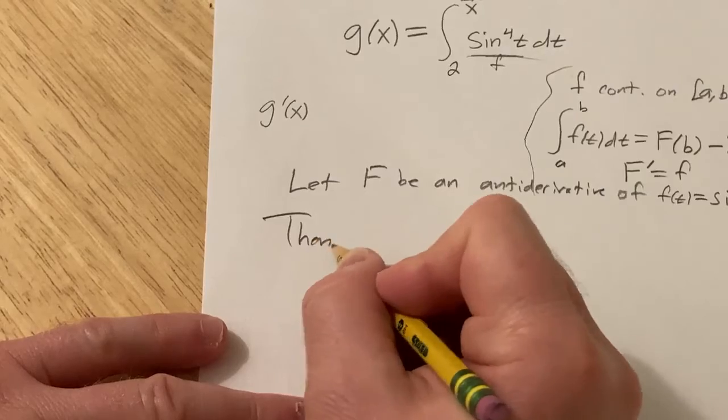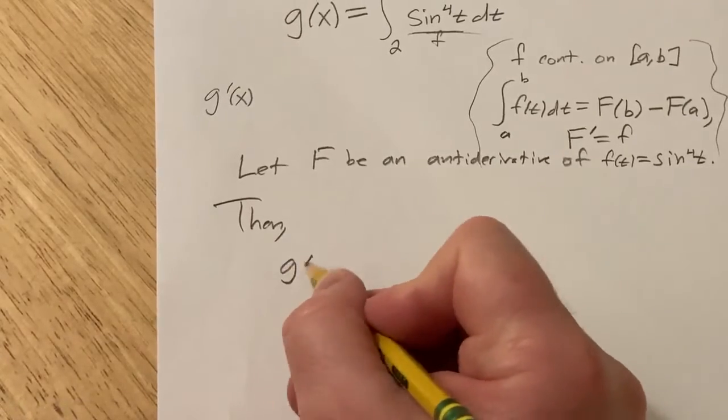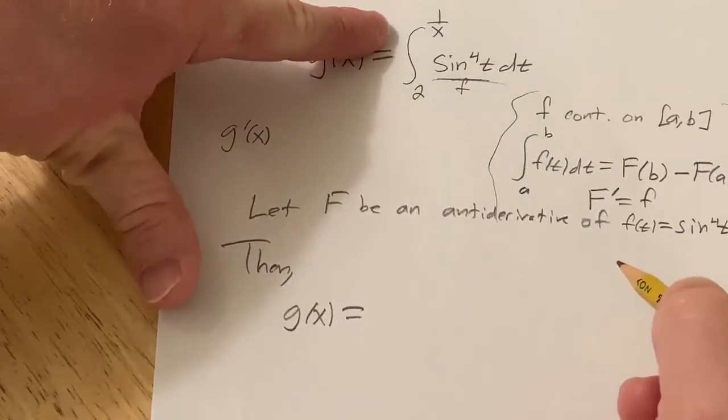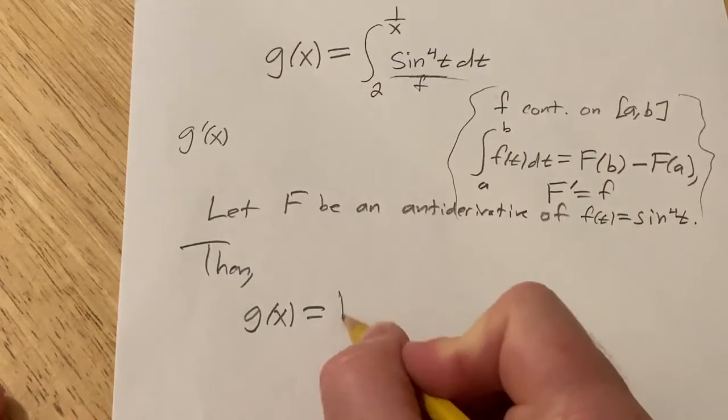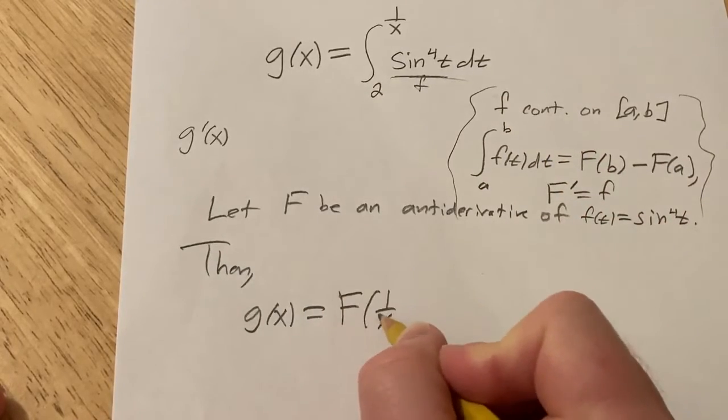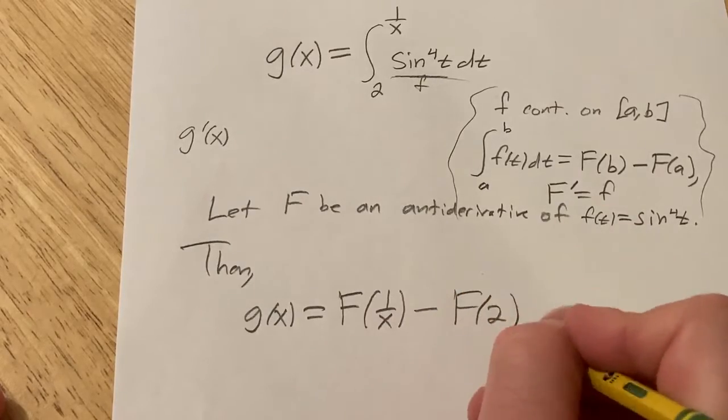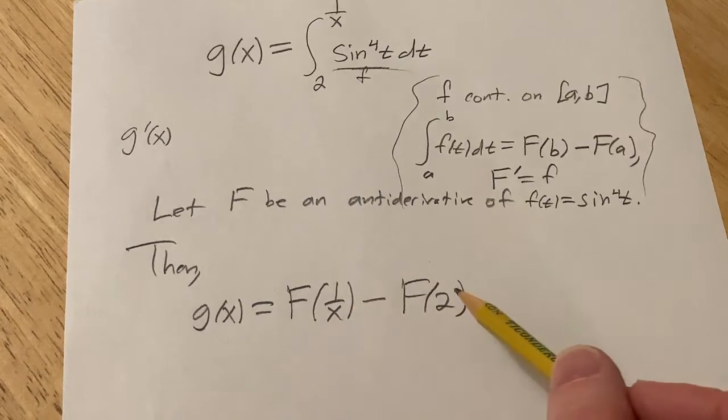So then we have that our function g of x is equal to big F of the upper limit of integration, right? That's our b. So it'll be big F of 1 over x minus big F of 2. So this is your b and this is your a.